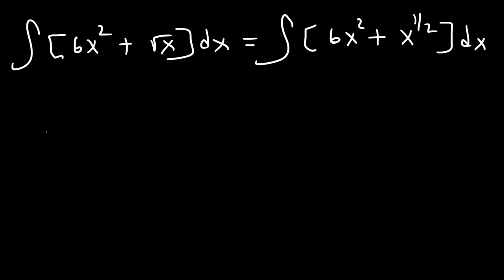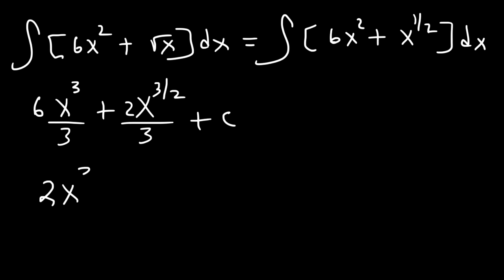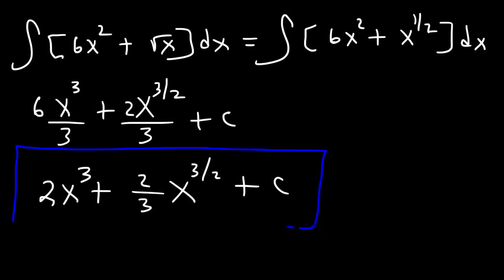Let's determine the antiderivative of x squared — it's x cubed divided by 3. And for x to the 1 half, 1 half plus 1 is 1.5 or 3 over 2. Instead of dividing by 3 over 2, you can multiply by 2 over 3, since 1 divided by 3 over 2 is the same as 2 over 3. We can simplify: 6 divided by 3 is 2. So the final answer is 2x cubed plus 2/3 x raised to the 3 halves, plus c.